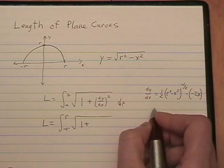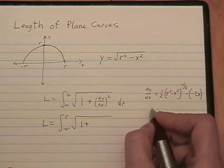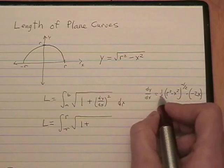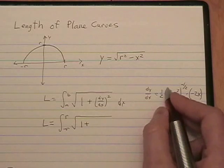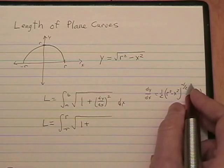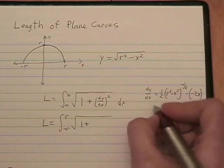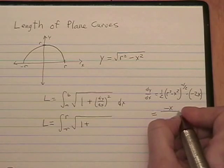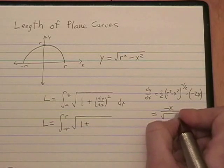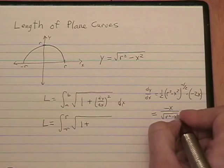Let me go ahead and simplify that into a form that will be useful to us. 1 half times negative 2 is, of course, negative 1. This is the 1 over the square root of r squared minus x squared. So, in a simplified form, our derivative is negative x over the square root of r squared minus x squared.